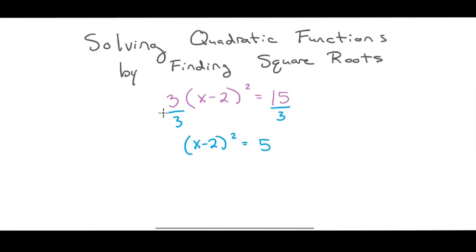Now what I want to do is I need to take the square root of both sides. So I'll take the square root of this and the square root of this. That's going to leave me x minus 2 equals plus or minus the square root of 5.